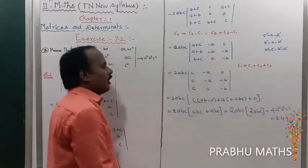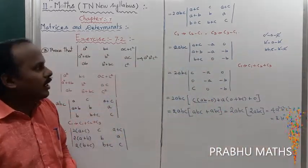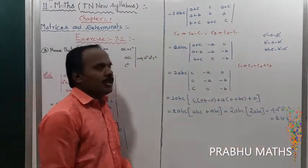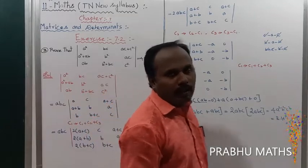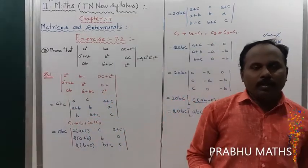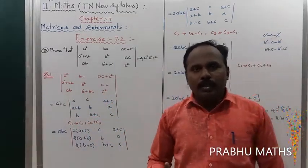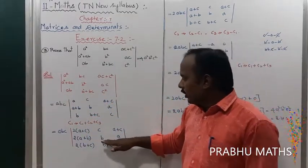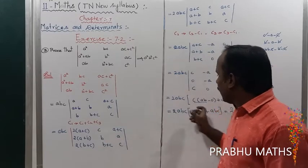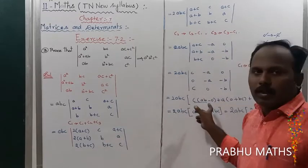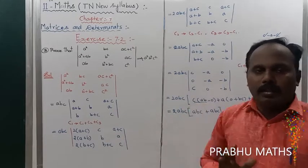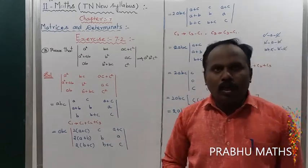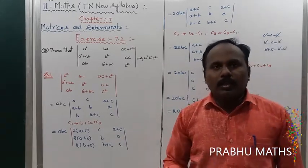This equals RHS. By applying the column rules step by step — taking common factors and column operations — we have proved the determinant identity.